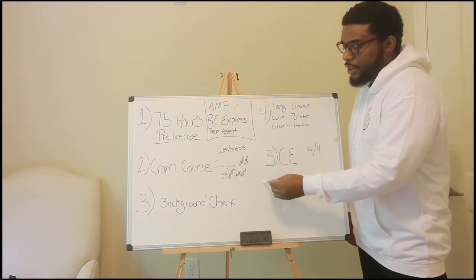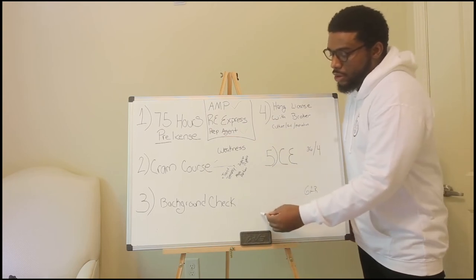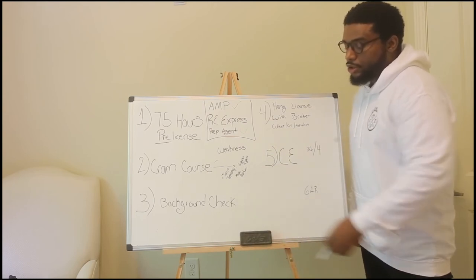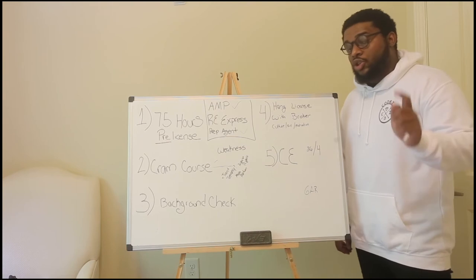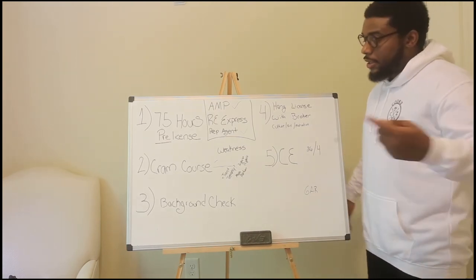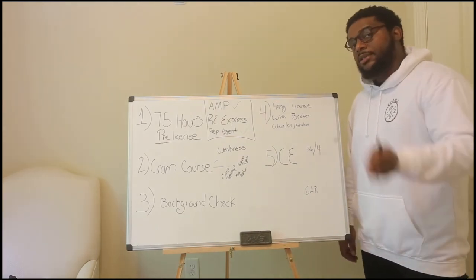After you pass the test, you're going to take the printout that they give you. You're going to go to the local police station. You're going to get your background check. And then you're going to submit that to your state's local commission office. And then at that point, you're going to be a licensed agent.